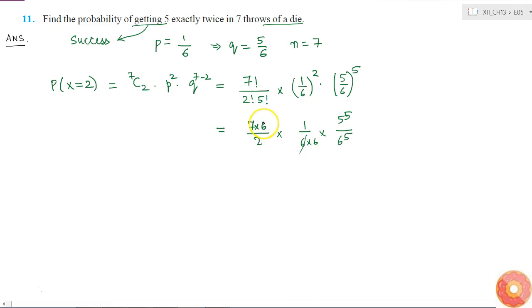Now here I can cancel 1 by 6 with this. So I will get 7 into 5 to the power of 5 divided by 2 into 6 to the power of 6.